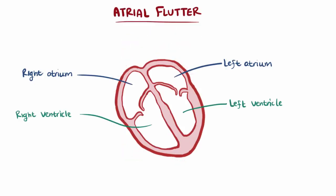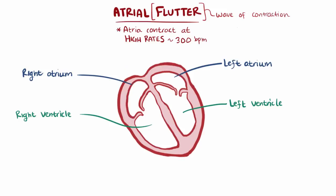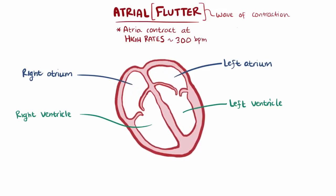Atrial flutter is used to describe when the atria contract at really high rates, about 300 beats per minute, but sometimes as high as 400 beats per minute. Why flutter? Well, there's a wave of muscle contraction that flows through the atria that looks a little like it's flapping or fluttering, hence the name.